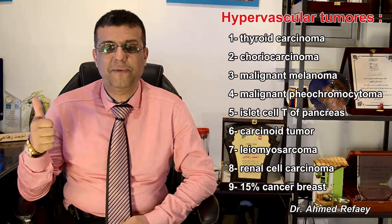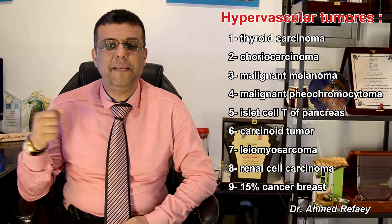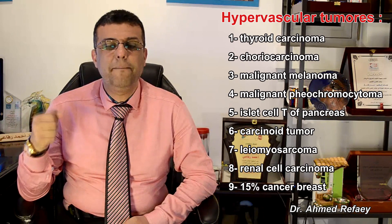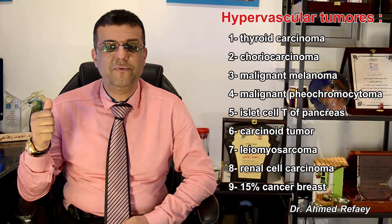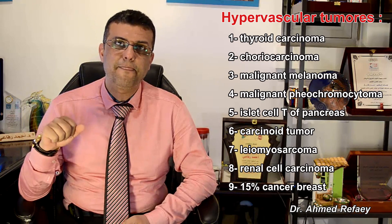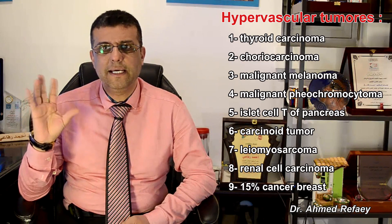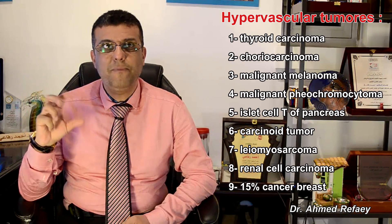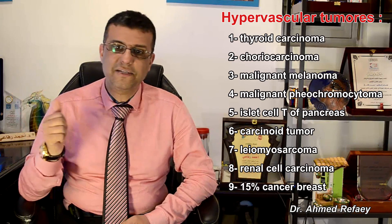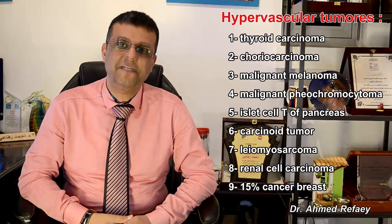The nine hypervascular tumors are: thyroid carcinoma, choriocarcinoma, malignant melanoma, malignant pheochromocytoma, islet cell tumor of the pancreas, carcinoid tumor, leiomyosarcoma, renal cell carcinoma, and 15% of breast cancer.